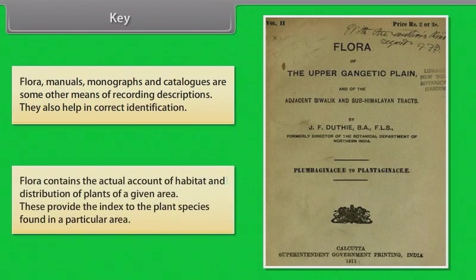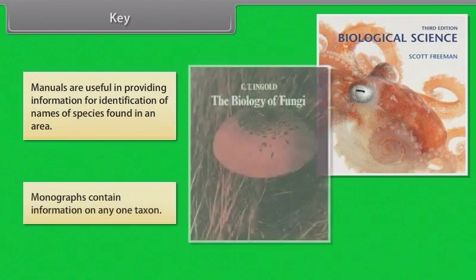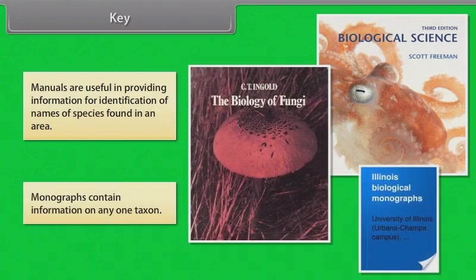Flora contains the actual account of habitat and distribution of plants of a given area and provides the index to plant species found in a particular area. Manuals are useful in providing information for identification of names of species found in an area. Monographs contain information on any one taxon.